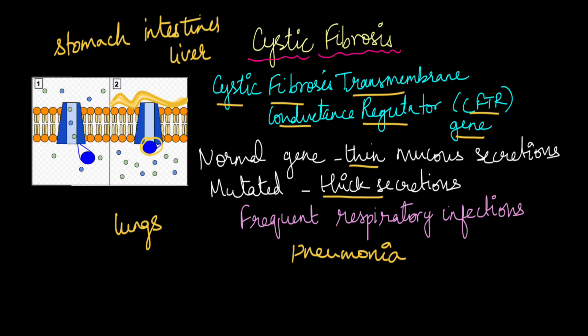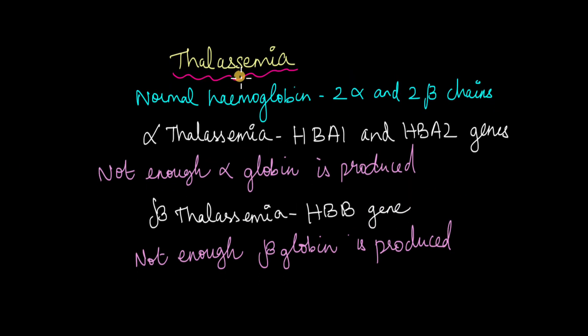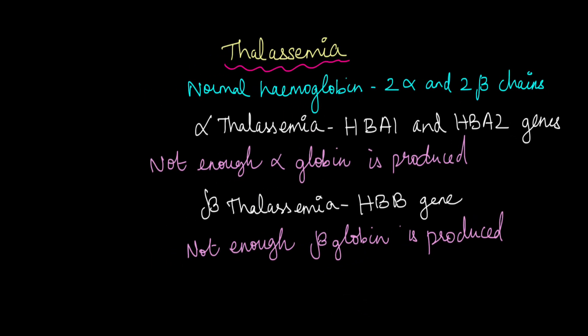Last, let's take a look at thalassemia. Now thalassemia is also another type of anemia which affects the red blood cells or the hemoglobin within the red blood cells. I just mentioned that normal hemoglobin has two alpha and two beta chains. This is how a normal hemoglobin looks like: beta chain 1, beta chain 2, alpha chain 1 and alpha chain 2.